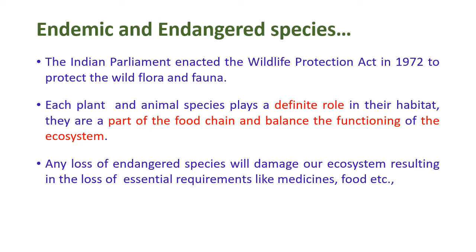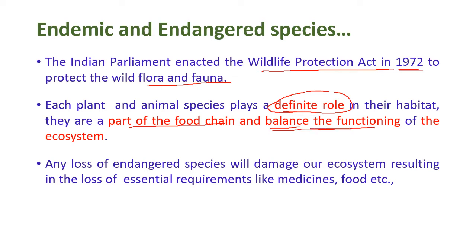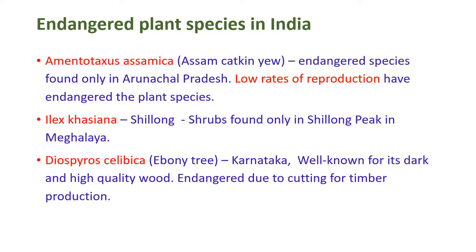The Parliament of India enacted the Wildlife Protection Act in 1972 to protect wild flora and fauna. Each plant and animal species plays a definite role in its ecosystem and is part of the food chain, performing a balancing function. Any disturbance or loss of endangered species will damage our ecosystem, resulting in the loss of essential resources for human beings like medicines, food, and other important things.